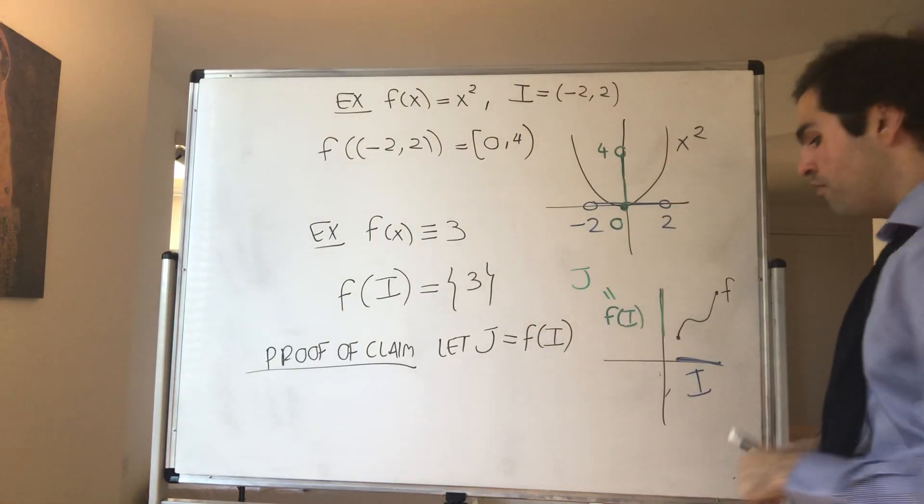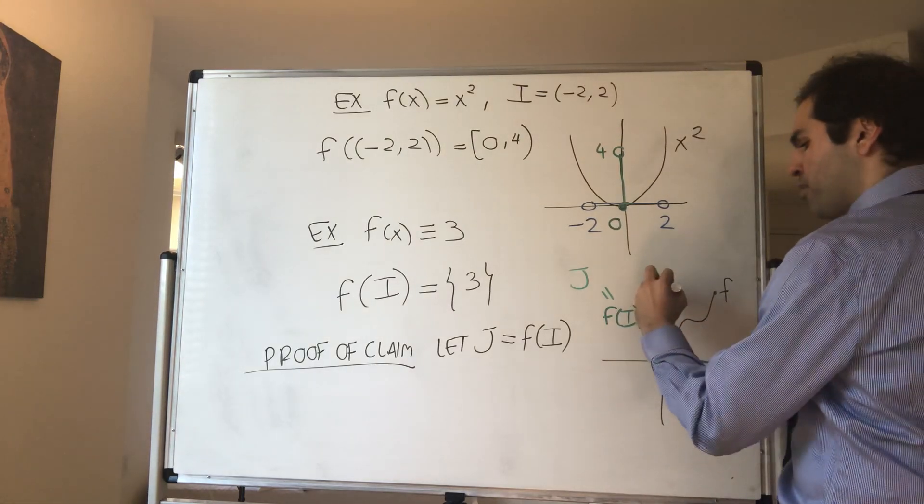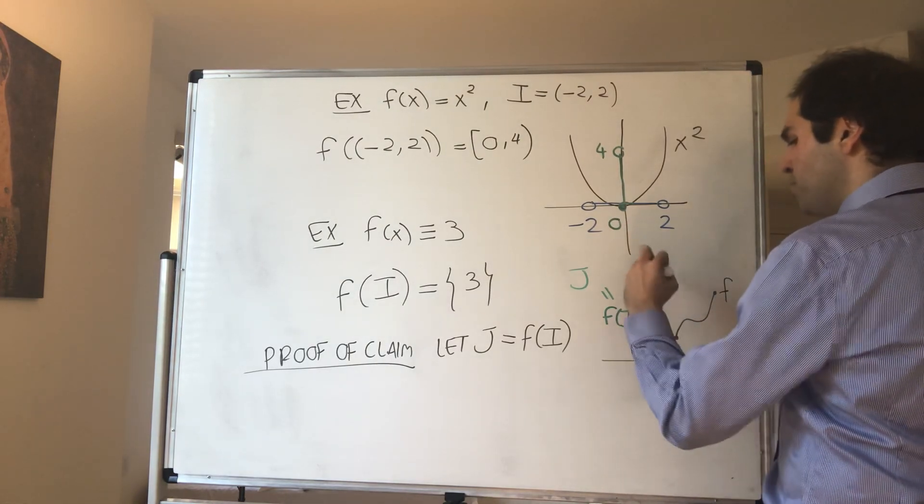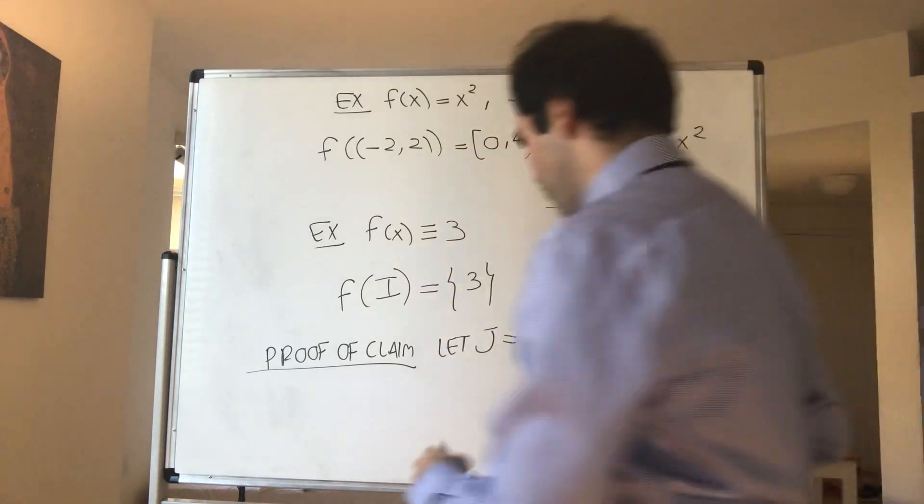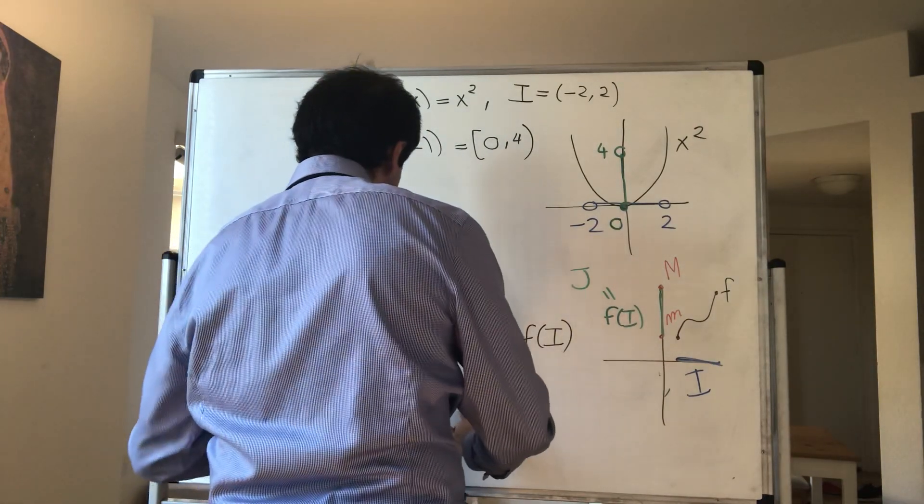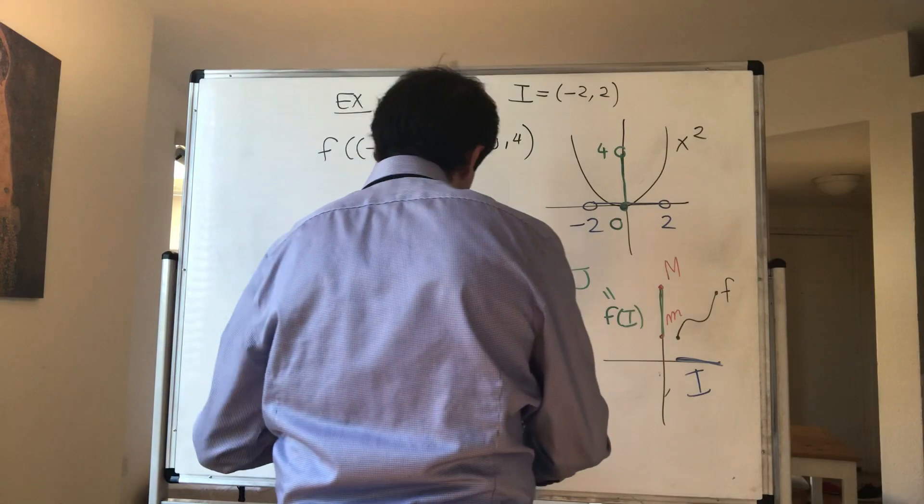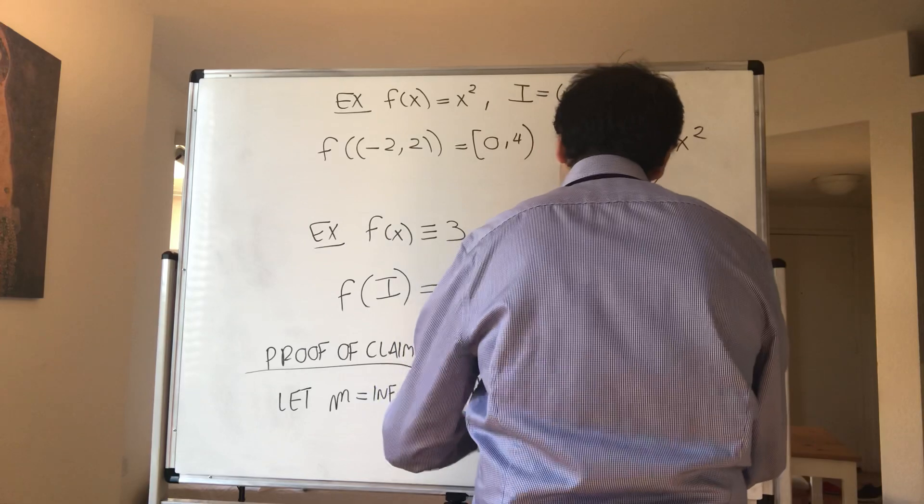Now J is a subset of R, and in particular it has, remember, what's called an infimum and a supremum. So let capital M be the supremum and little m be the infimum. So let little m be the infimum of J.